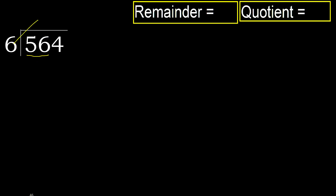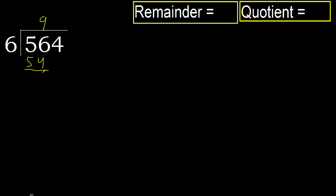Multiply by which number is nearest to 56, but not greater. 6 multiplied by 9 is 54, which is not greater. Okay. Subtract: 56 minus 54 equals 2.